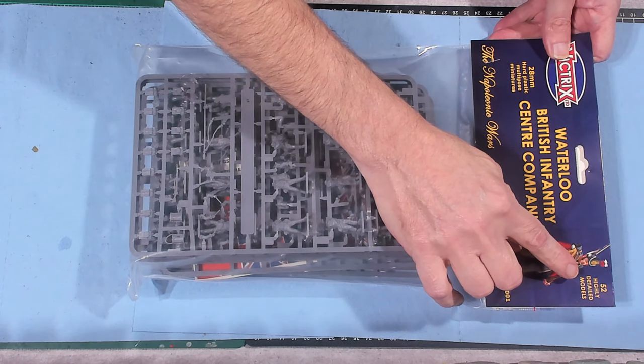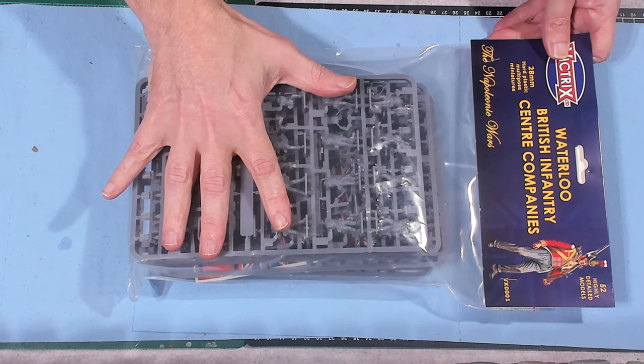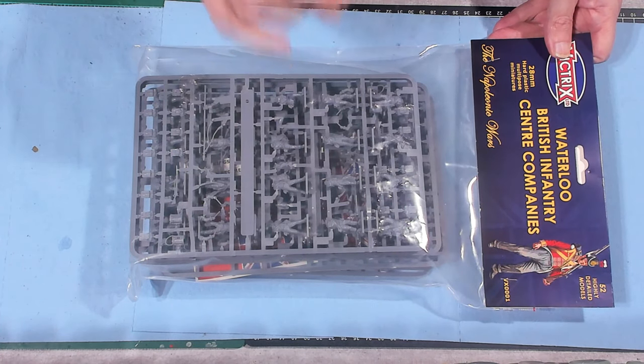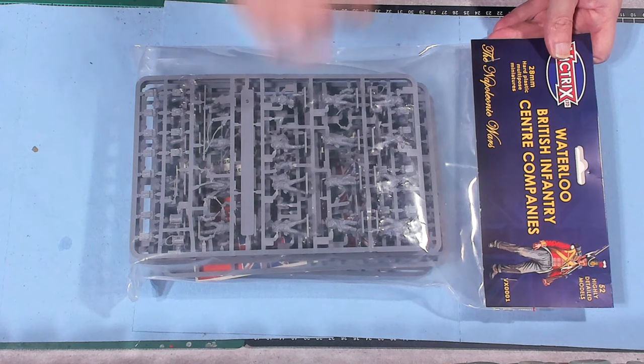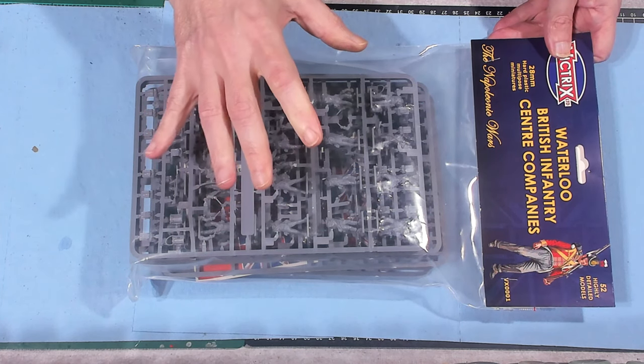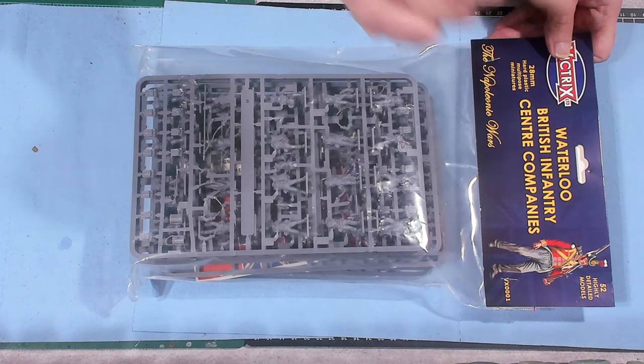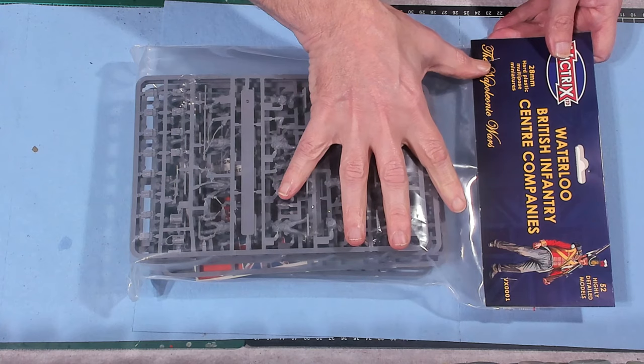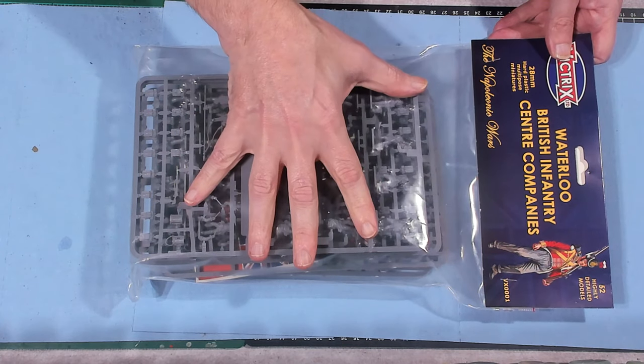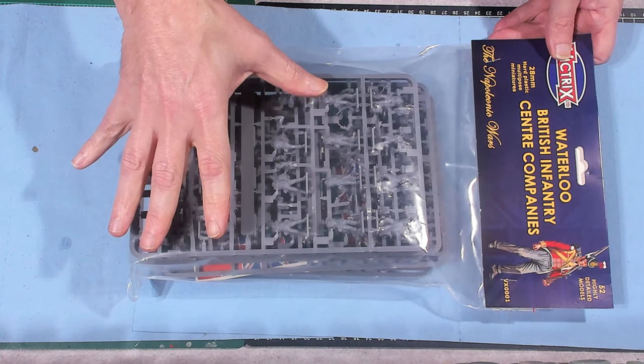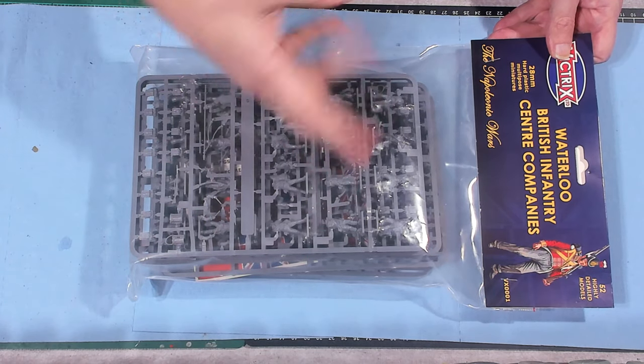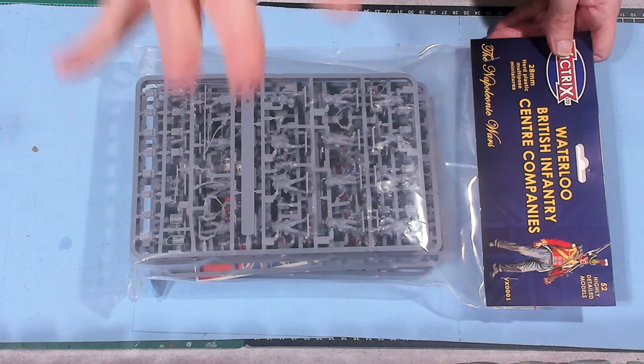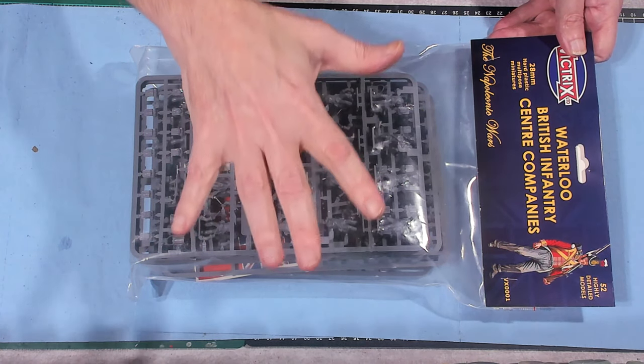Now you get 52 in this bag, 52 center companies. If I was just doing just a center company without any flank or anything like that I could get two black powder units of 24 with this set, but I'm going to mix this and the flank companies together and we're going to get even more with a variety of models in each unit. Let's take a look at the models that you get.